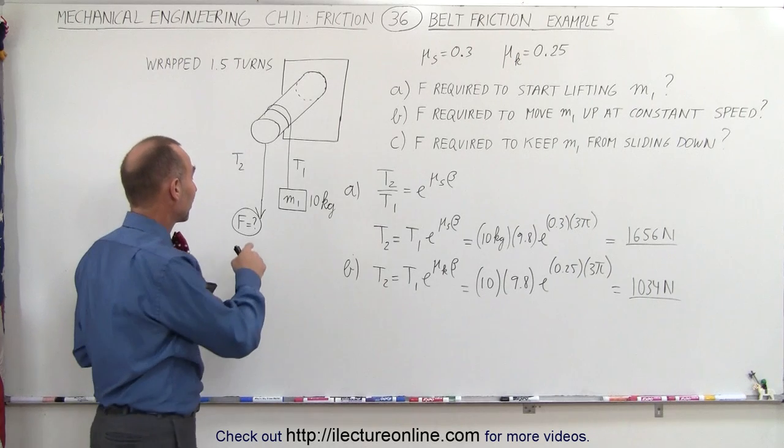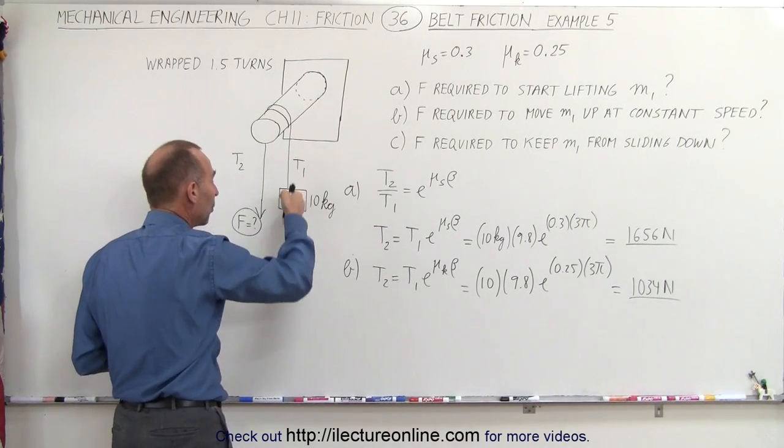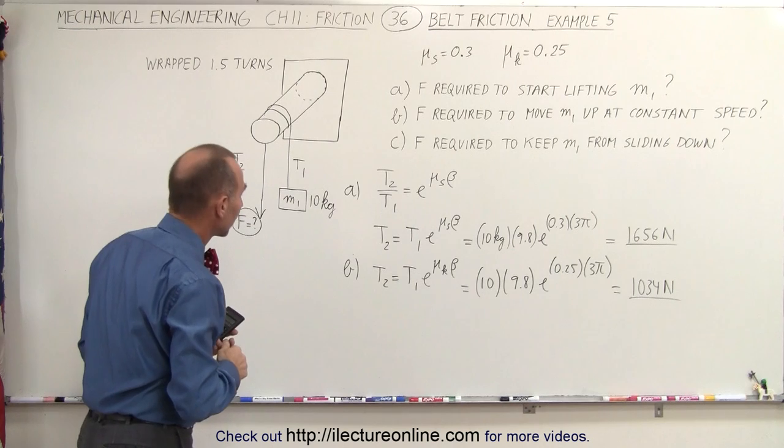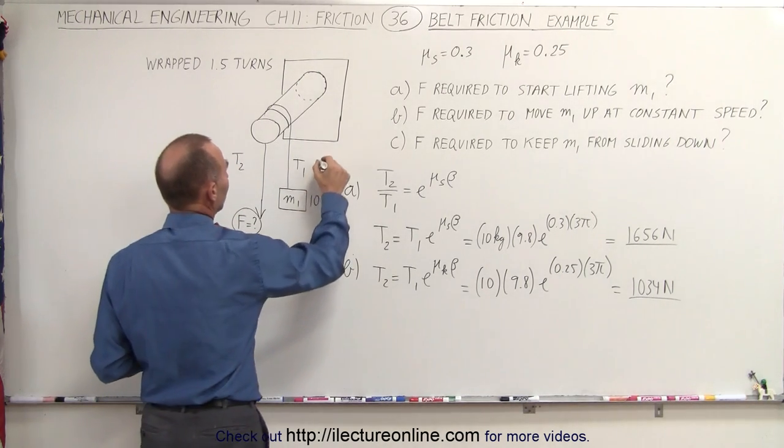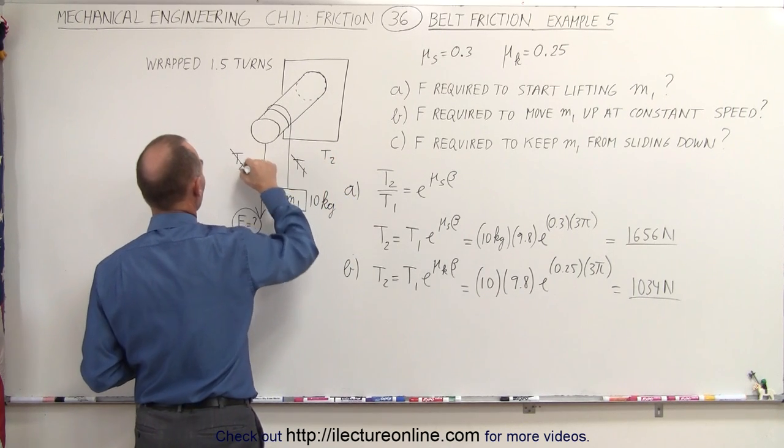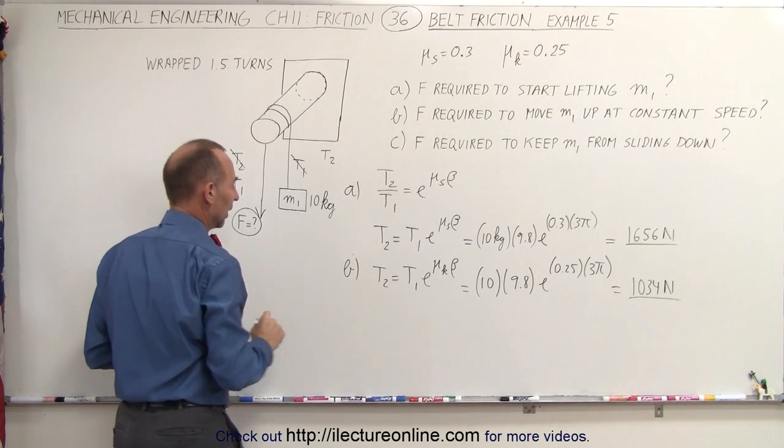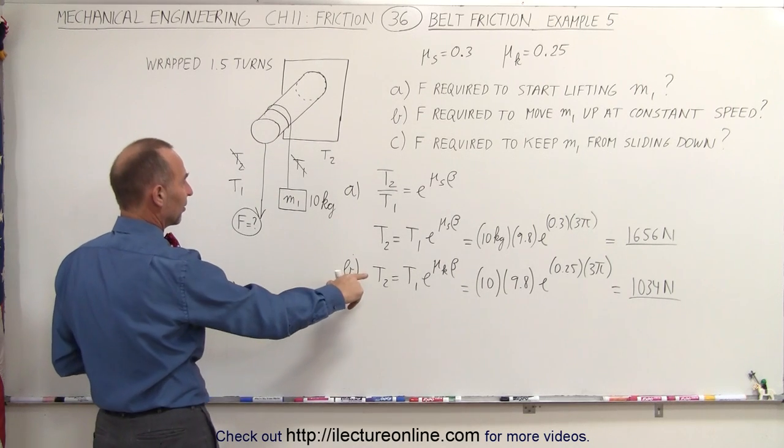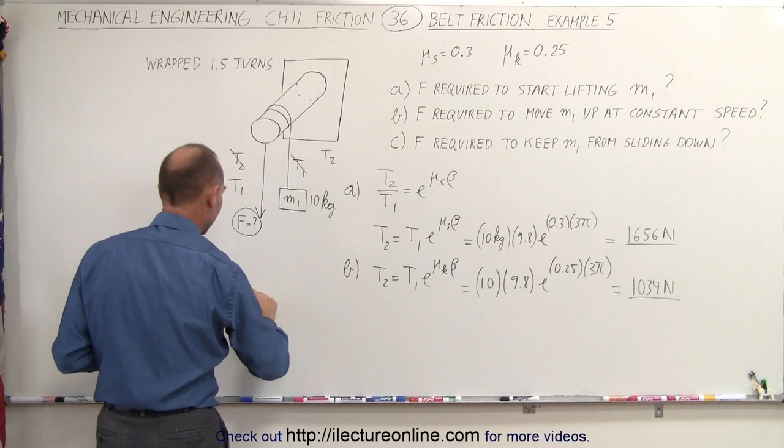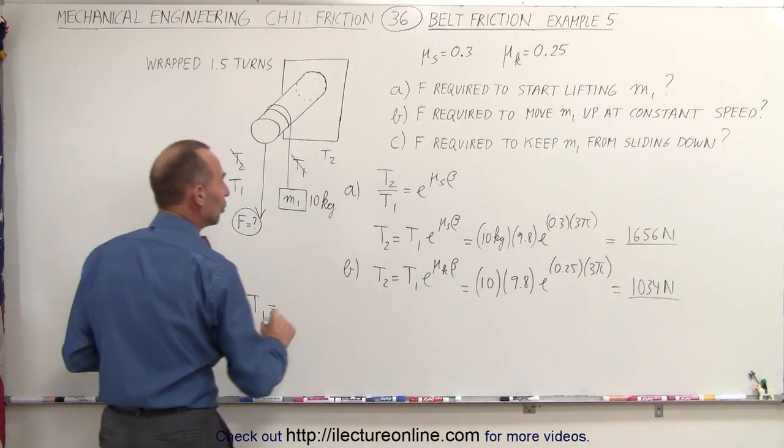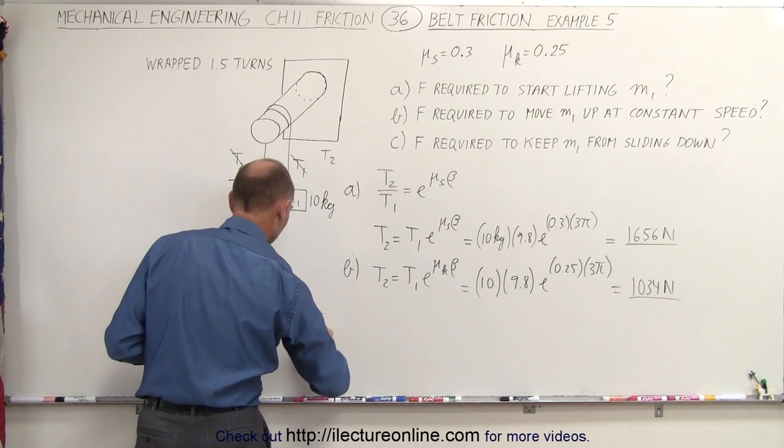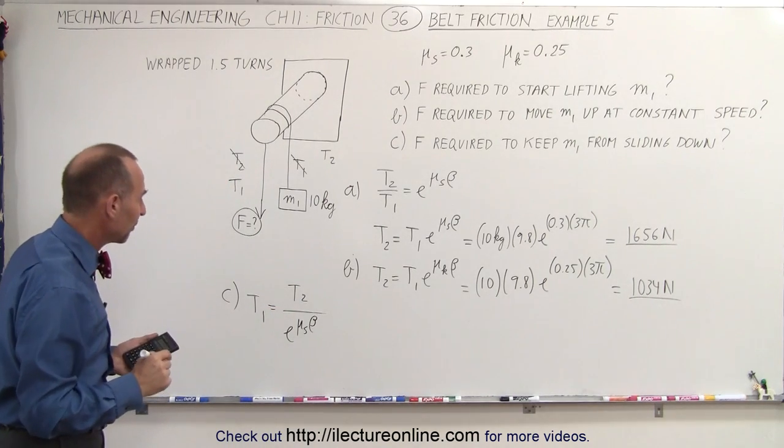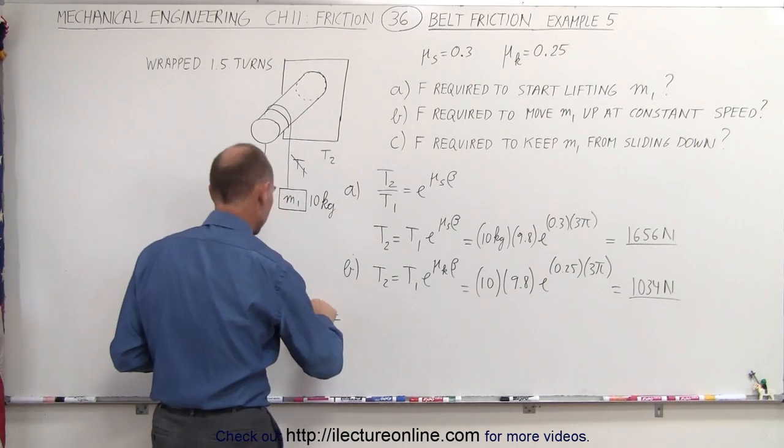Now for the third part, we need to figure out what force is required here to keep M1 from going down. So in this case, we're going to have to reverse the order. This now becomes T2, and this now becomes T1. So for part C, we can now say that since now we're looking for T1, we can say that T1 is equal to T2 divided by e to the mu sub s times beta, the angle that the rope is wrapped around the peg with.